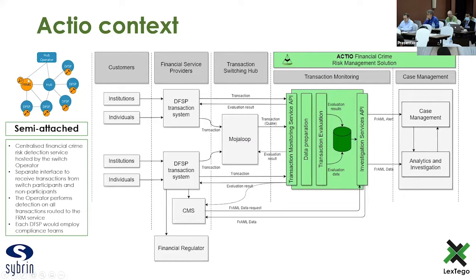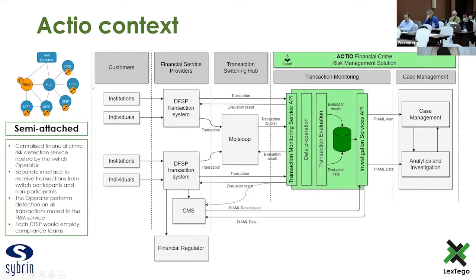In our overall context, the fraud risk management solution is intended to sit adjacent or very near to the hub so that it can ingest transactions that flow through the hub. We also wanted to allow platforms that are not always feeding their transactions through the hub to send their transactions directly to the financial crime and risk management platform — for DFSPs who want to monitor internal or point-to-point transactions — providing a comprehensive overview.